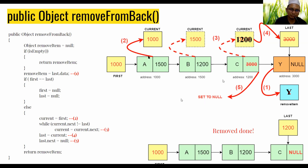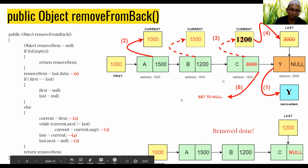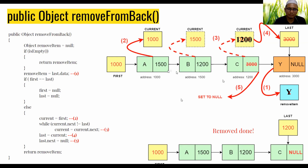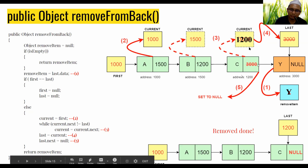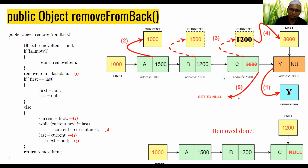First we set current to first, then it repeats to traverse to the next node. The current will fill with the second node, then the second last, and after finding the second last it stops.